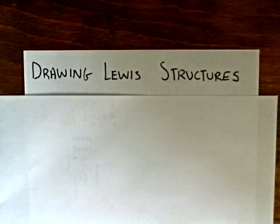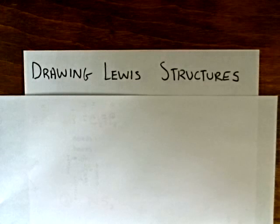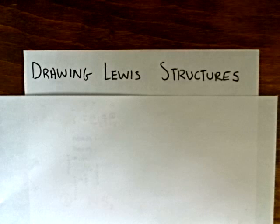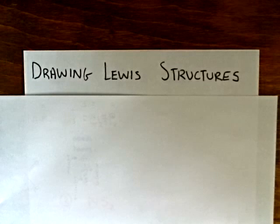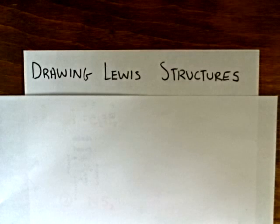In this video, I want to go over how we draw Lewis structures for species that don't have an expanded octet. These are species that you'll find in period 2 and below. The calculations I use in order to draw these structures will end up giving us a number that tells us the number of bonds that the species we're trying to draw will have.